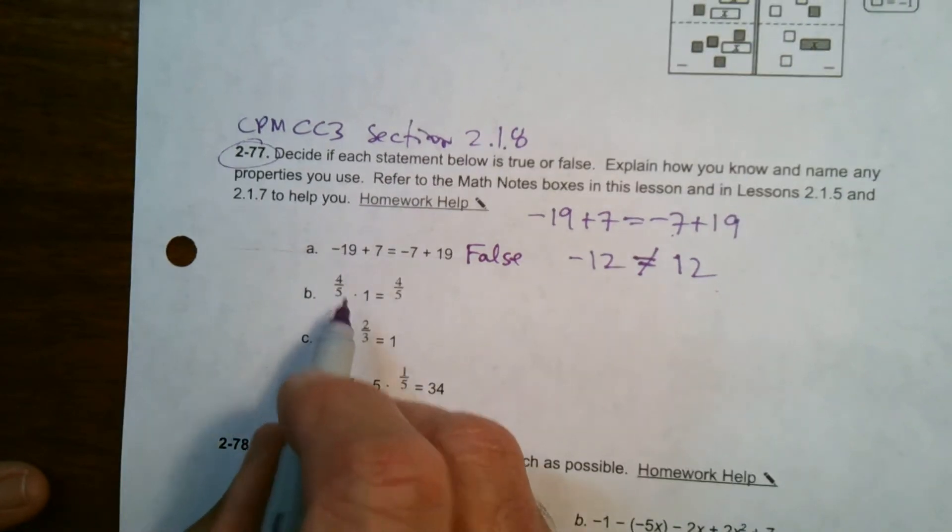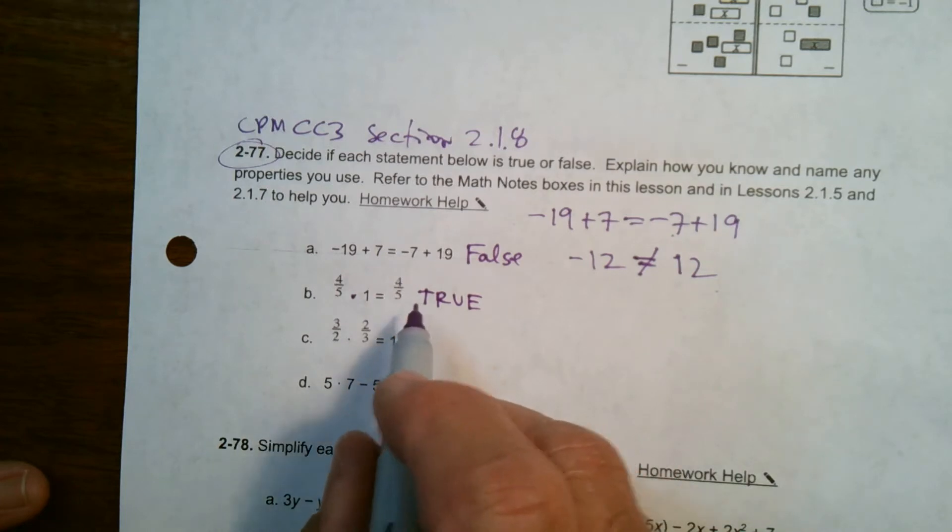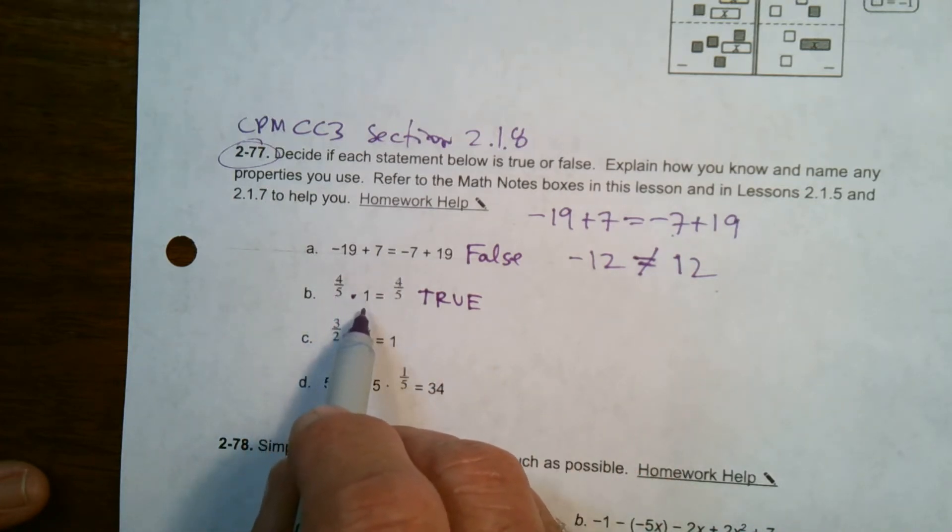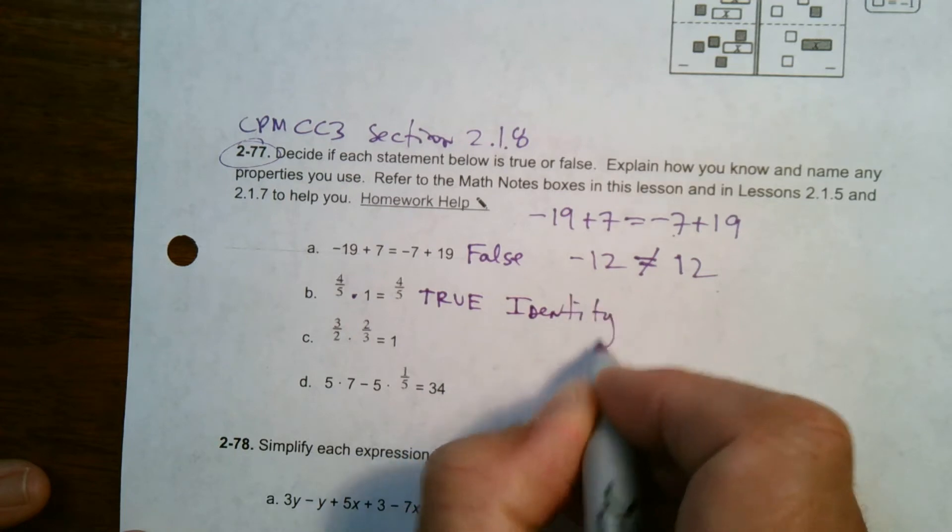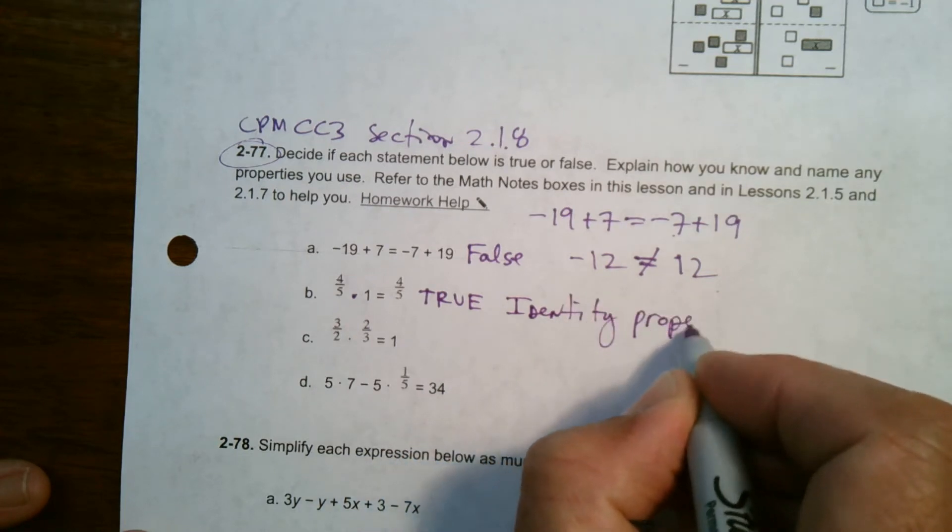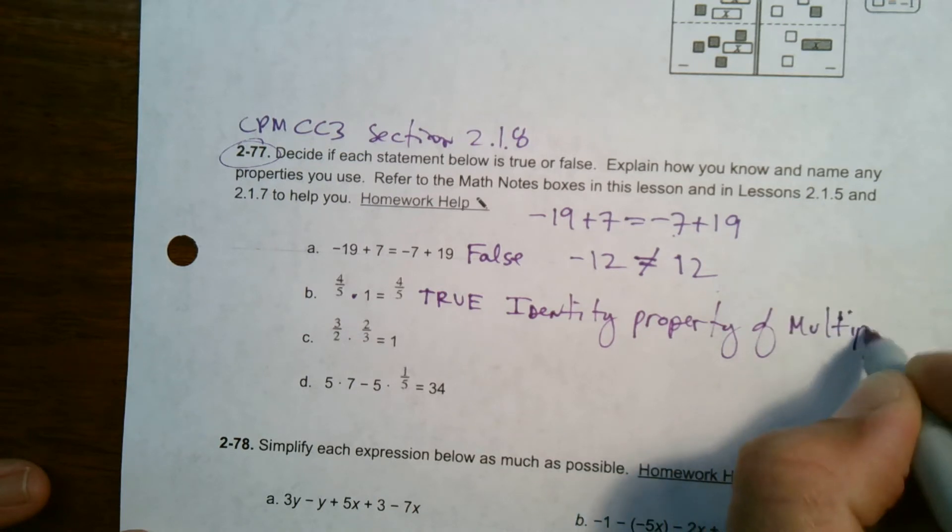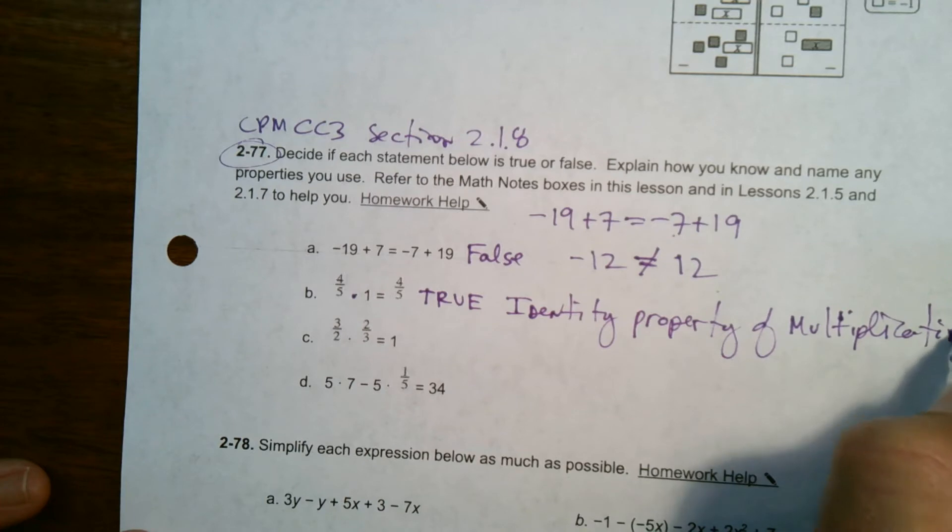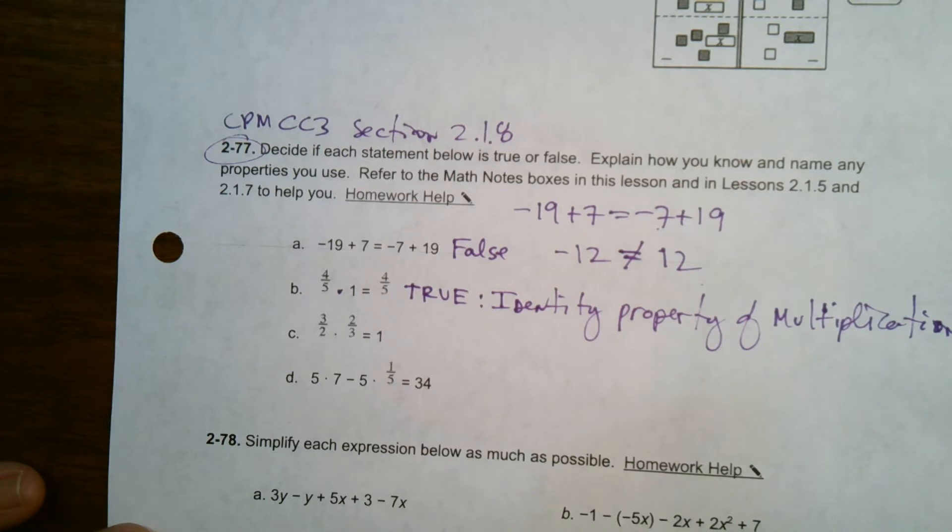So then B says 4 fifths times 1 equals 4 fifths. Well, that would be true, wouldn't it? And in fact, that is a property. If you take a number, multiply by 1, and it equals itself, we call that the identity property of multiplication. So this is true because of the identity property of multiplication.